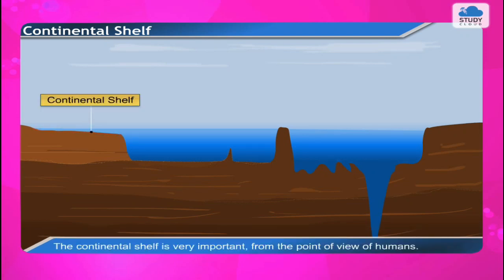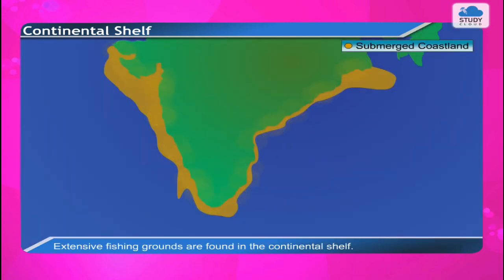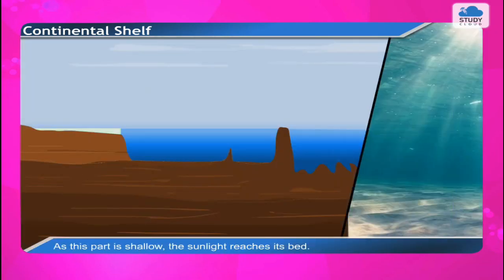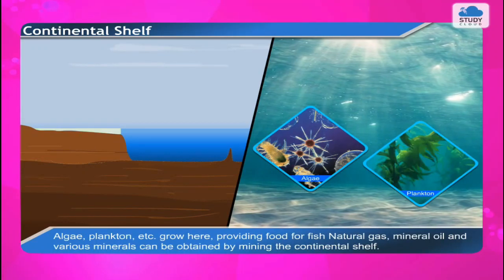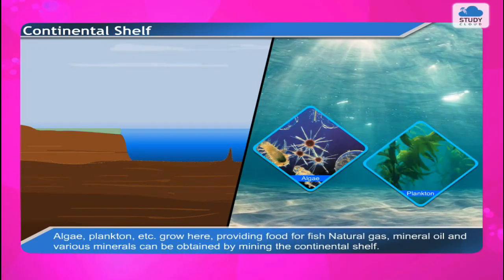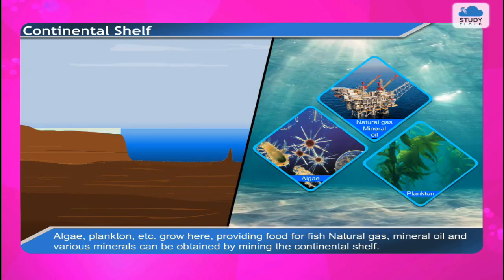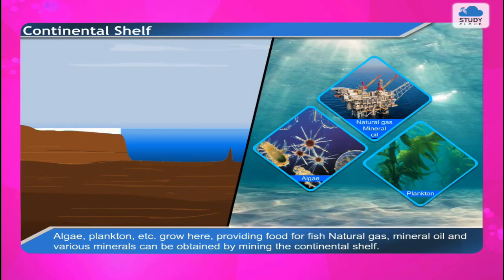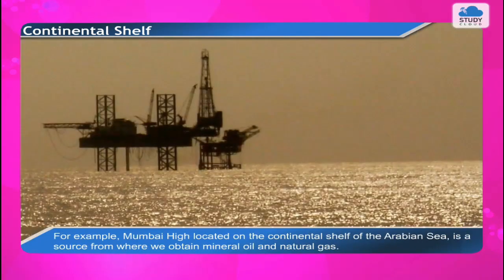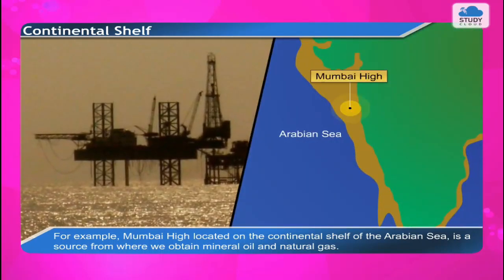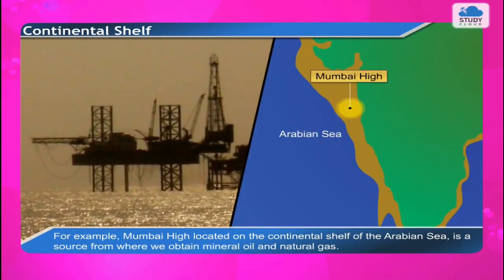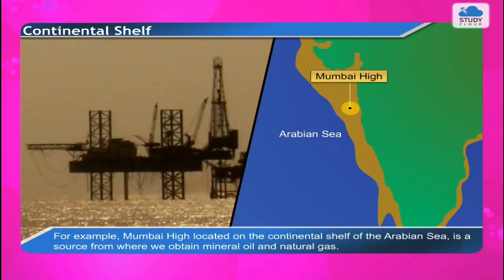The continental shelf is very important for humans. Extensive fishing grounds are found here. As this part is shallow, sunlight reaches its bed, allowing algae, plankton, etc. to grow, providing food for fish. Natural gas, mineral oil, and various minerals can be obtained by mining the continental shelf. For example, Mumbai High, located on the continental shelf of the Arabian Sea, is a source of mineral oil and natural gas.